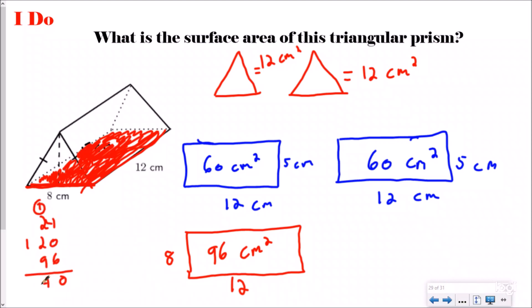I add those together, and my surface area for this triangular prism should be 240 centimeters squared. So I drew out my faces, I found the area of each of them, and I added them together.